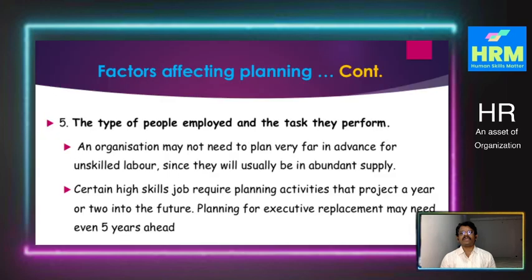The fifth factor is the type of people employed and the tasks they perform. Organizations may not need to plan very far in advance for unskilled labor, since they are usually in abundance. It depends on the skills availability and the skills required for the organization. For certain high-skilled job requirements, planning activities may project a year or two into the future. Planning for executive replacement may need even five years ahead. So according to the type of people required, we need to plan human resources accordingly.